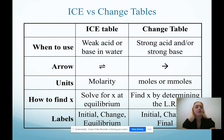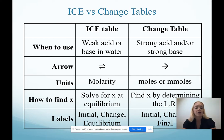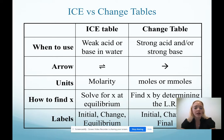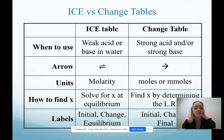As we go into acid-base titrations, we will solely be using change tables. But just a quick review: an ICE table — remember the E stands for equilibrium — we use these for any systems where we have a weak acid or a weak base in water. It sets up equilibrium, we have equilibrium arrows, and our units must be in molarity because we're only using aqueous solutions. We could use pressures for gases, but we need molarity for solutions. We solve for x using an equilibrium constant, and our labels are initial, change, and equilibrium.